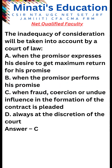Answer: c. According to Explanation 2 of Section 25 of the Indian Contract Act 1872, an agreement to which the consent of the promiser is freely given is not void merely because the consideration is inadequate, but the inadequacy of the consideration may be taken into account by the court in determining whether the consent of the promiser was freely given. Section 13 states that two or more persons are said to consent when they agree upon the same thing in the same sense — consensus ad idem.